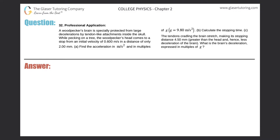Number 32, a professional application. A woodpecker's brain is specially protected from large decelerations by tendon-like attachments inside the skull. While pecking on a tree, the woodpecker's head comes to a stop from an initial velocity of 0.6 meters per second in only a distance of 2 millimeters. Find the acceleration in meters per second squared and in multiples of g.